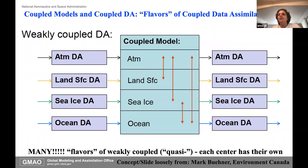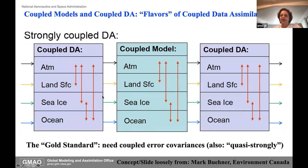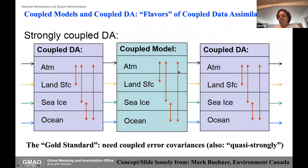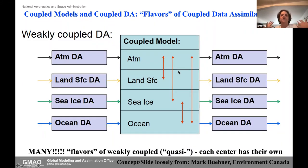Something called weakly coupled: the essential coupling is through the model itself. The data assimilation runs independently for each component, but they are used to drive a coupled model where all the components interact with each other, and that is used to create the initial states for the next atmospheric or land DA.